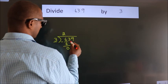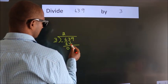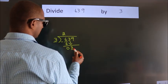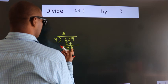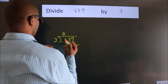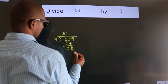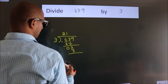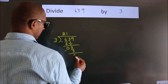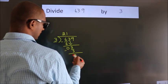After this, bring down the beside number. So, 3 down. So, 3. When do we get 3? In 3 table. 3 1's, 3. Now, we subtract. We get 0.